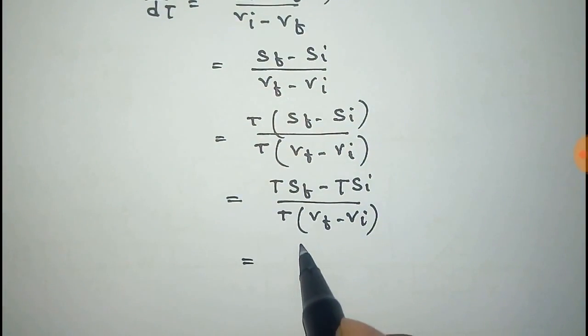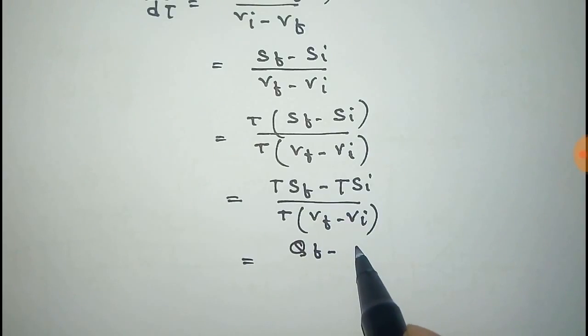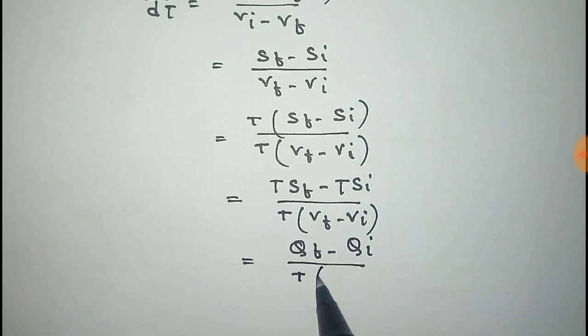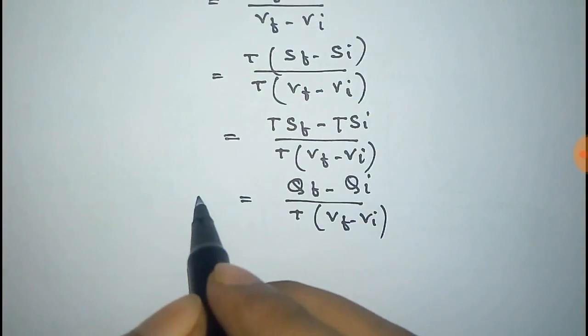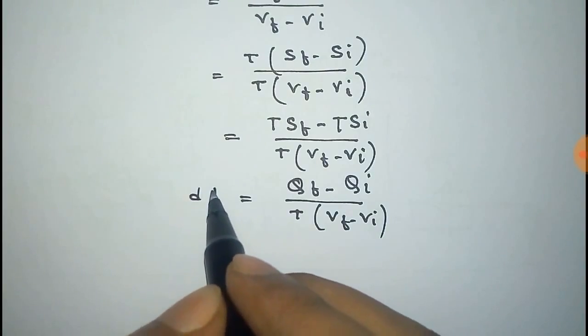Now this is equal to heat Qf and this is Qi heat by the remaining. Now this is equal to dP/dT.